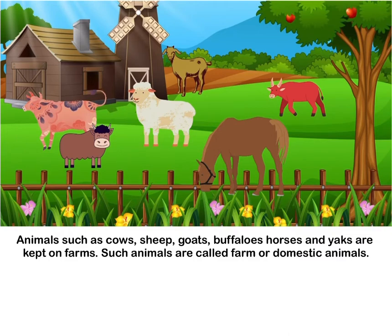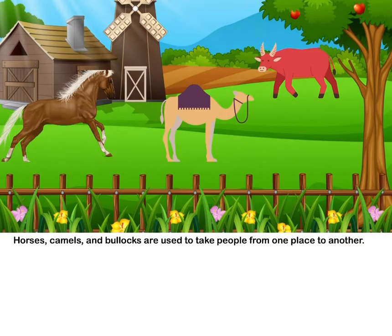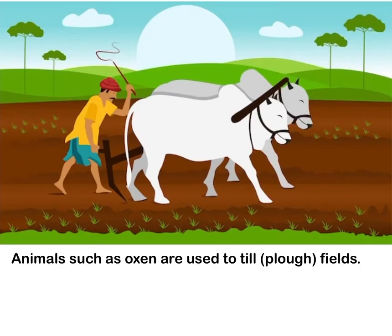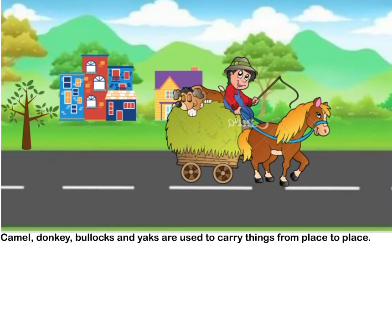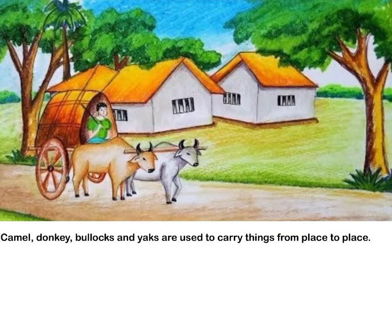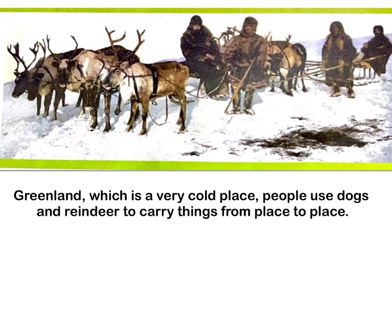Horses, camels, and bullocks are used to take people from one place to another. Animals such as oxen are used to till and plow fields. Camels, donkeys, bullocks, and yaks are used to carry things from place to place. In Greenland, which is a very cold place, people use dogs and reindeer to carry things from place to place.